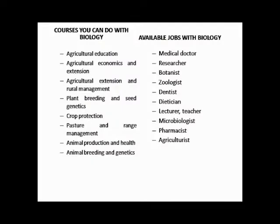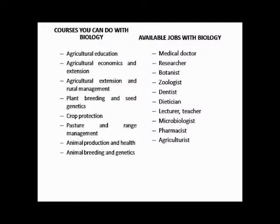The courses you can study with Agricultural Science include: Agricultural Education, which involves educating other people about Agricultural Science; Agricultural Economics and Extension; Agricultural Extension and Rural Management or Rural Development; and Plant Breeding and Seed Genetics, where you crossbreed your plants and work on their genetics to give you better yield or better seed varieties.